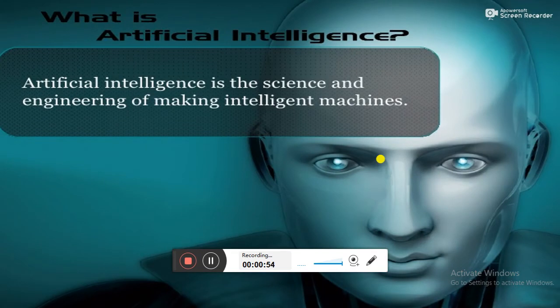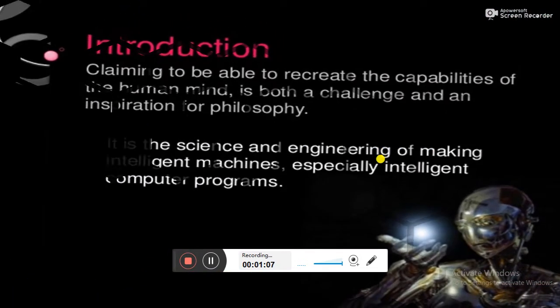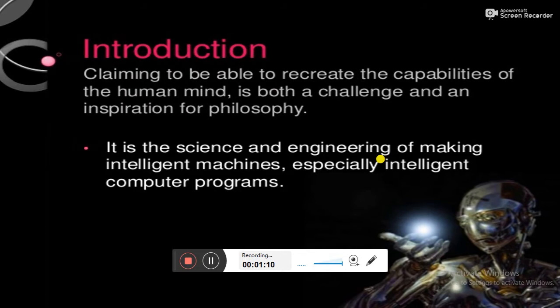A question arises in your mind: what is artificial intelligence? Artificial intelligence is the science and engineering of making intelligent machines. These systems claim to be able to recreate the capabilities of the human mind, which is both a challenge and an inspiration for philosophy. It is the science and engineering of making intelligent machines, especially intelligent computer programs.